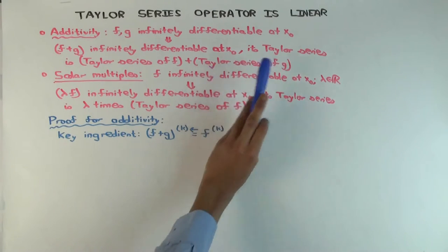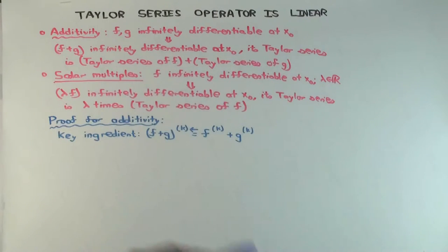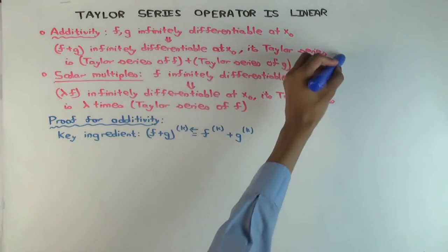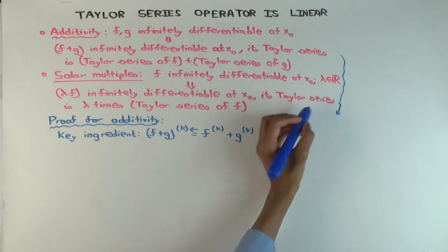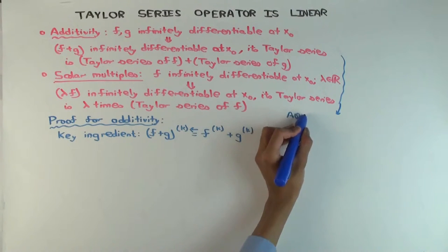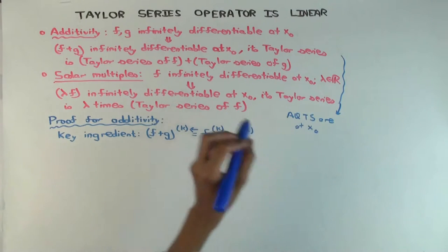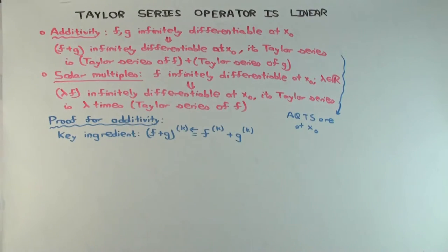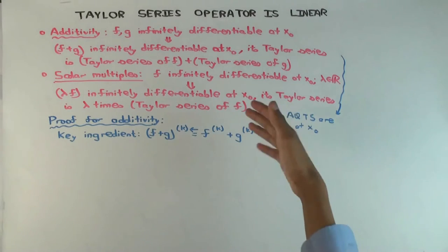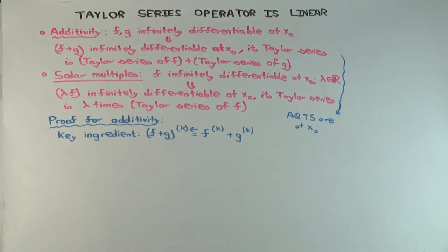Okay, I didn't write at x0 each place just not to complicate things, but yes, all Taylor series are at x0. Now what do I mean when I say adding two Taylor series? I just mean add them coefficient-wise. For each x minus x0 to the k, I just add the coefficient in one Taylor series to the coefficient in the other, the way you add polynomials and power series.